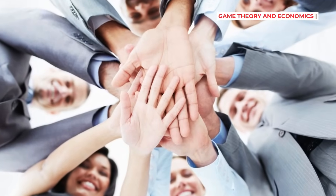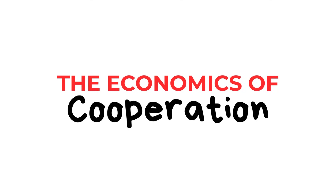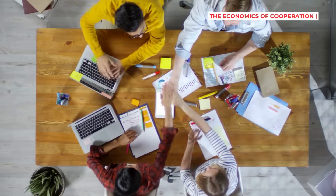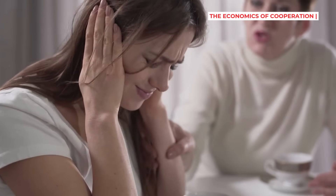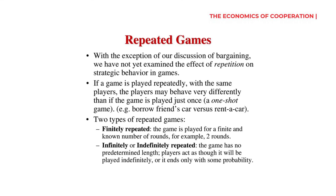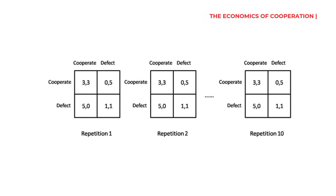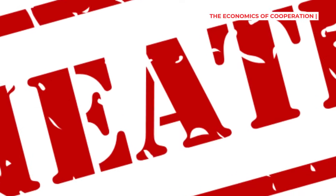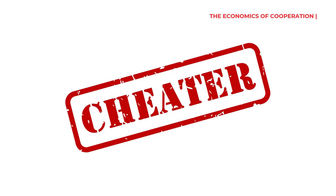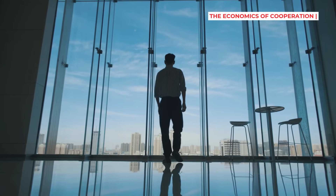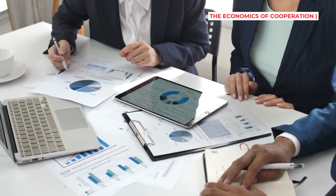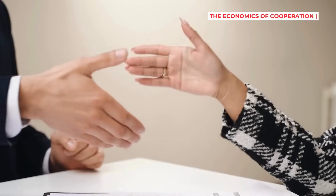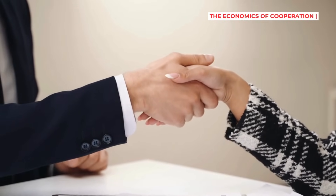But here's the billion-dollar question: if selfishness often leads to disaster, how have humans built cooperative societies? Imagine a world where everyone only looked out for themselves — no sharing, no teamwork, no trust. We'd still be living in caves. The secret lies in changing the game itself. The magic ingredient is repetition. When games are played over and over, your reputation matters. If you cheat someone today, they won't cooperate tomorrow. This shadow of the future transforms one-time games into relationships where cooperation makes sense. Trust becomes an invisible superpower that makes everything easier.